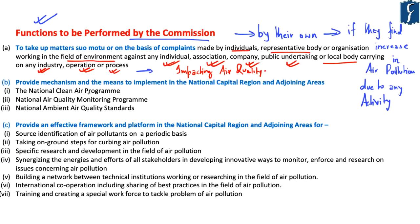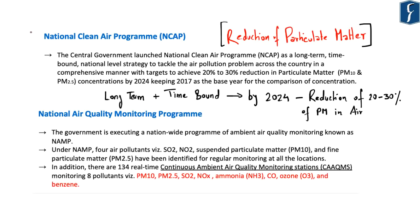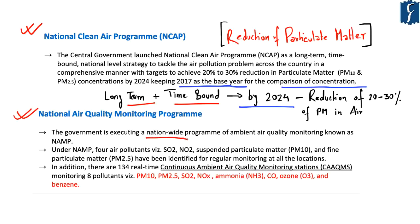The commission is also empowered to provide mechanisms to implement in NCR and adjoining areas: the National Clean Air Program, the National Air Quality Monitoring Program (NAMP), and National Ambient Air Quality Standards. The National Clean Air Program is a long-term time-bound program to reduce particulate matter by 20–30% by 2024, with 2017 as the base year. Under NAMP, four pollutants — sulfur dioxide, nitrogen dioxide, PM10, and PM2.5 — are identified for regular monitoring at all locations.